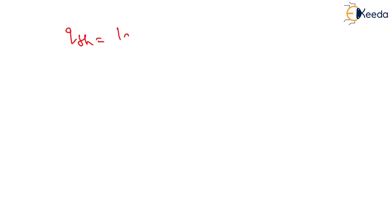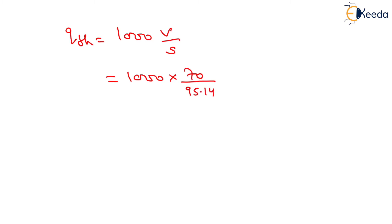Now we need to determine Q theoretical, which equals 1000V upon S. With V equals 70 km per hour and S equals 95.14 meters, solving this gives Q theoretical equals 735.75 vehicles per hour.